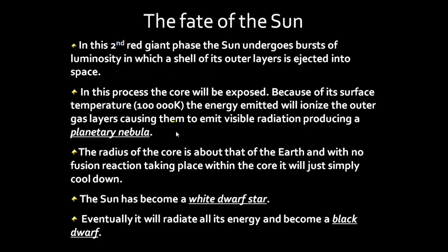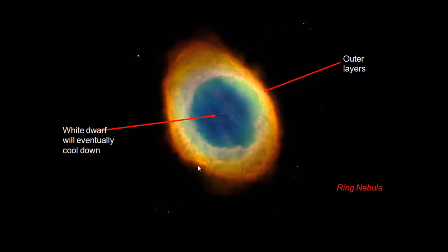In the second stage, the outer shell is ejected into space and the core is exposed — the white dwarf — at 100,000 Kelvin. The outside glows from the energy of the core and becomes a planetary nebula. The radius of the core is about that of the Earth, but with no more nuclear fusion it will just cool down with time, becoming a white dwarf and eventually a black dwarf, though that will take the age of the universe. The white dwarf is here, and the planetary nebula — what was left of the outer shell — glows from the radiation of the white dwarf.